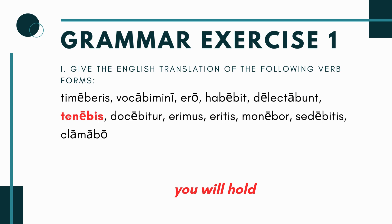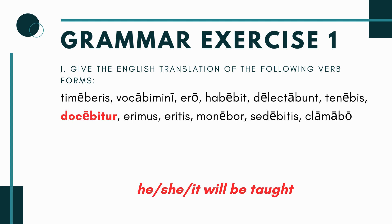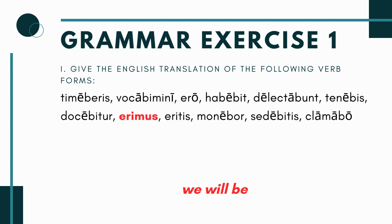Next you have 'tenebis' — this is the verb tenere, to hold. 'Bi' makes it future, 's' is second person singular active voice, so this just means 'you will hold.' Next you have 'docebitur' — the 'bi' makes it future, 'tur' is a passive ending, third person singular passive. It's the verb to teach but passive — 'he, she, or it will be taught.'